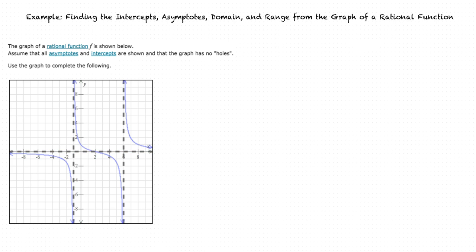At this point, we've found the vertical asymptotes, horizontal asymptotes, domain, range, and x and y-intercepts of this graph. So we're done. Thank you.